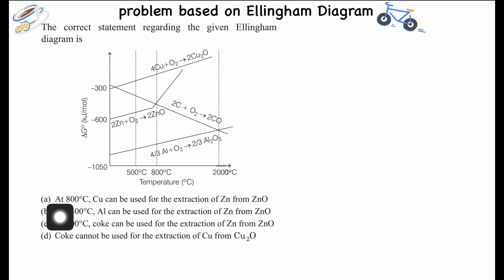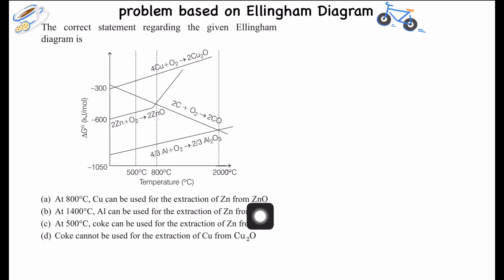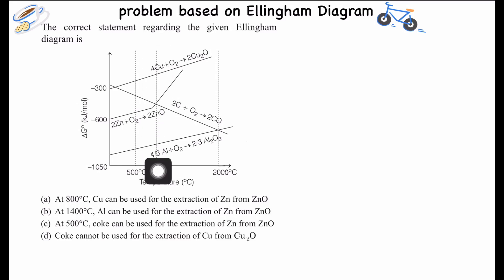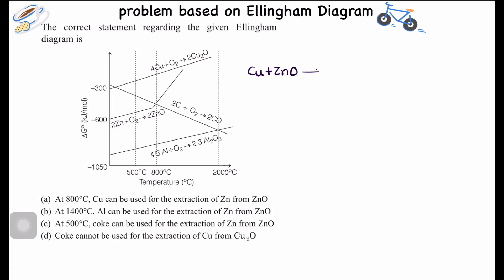The first option states that at 800°C, copper can be used for the extraction of zinc from ZnO. At 800°C, we'll draw a vertical line on the diagram. This is saying that the reaction of copper reducing ZnO will be feasible at 800°C.